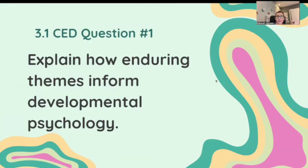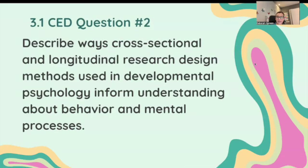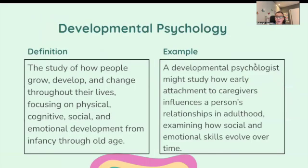CD question number one is: explain how enduring themes inform developmental psychology. In another video I'll go through the essential knowledge you need to answer this question. The second question for 3.1 is: describe ways cross-sectional and longitudinal research design methods used in developmental psychology inform understanding about behavior and mental processes. There's a separate video for this one as well with all the essential knowledge you might need. But right now we're just going to look at the vocab or the key terms for this section.